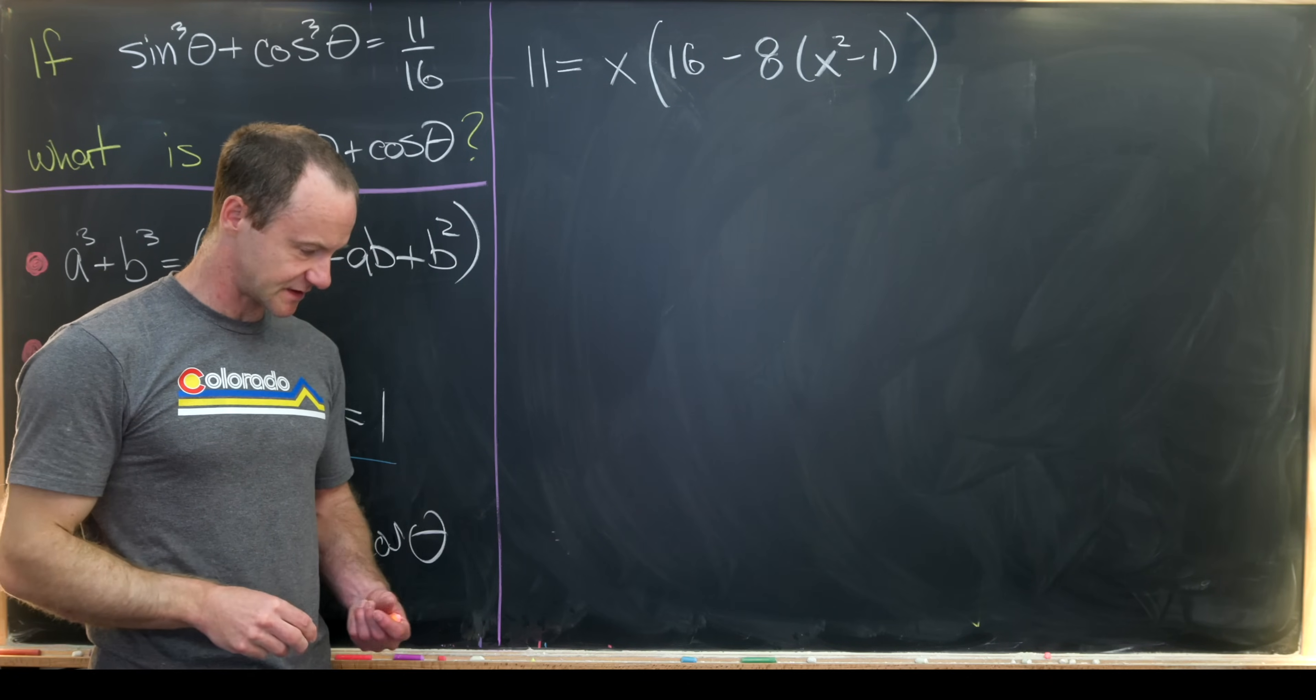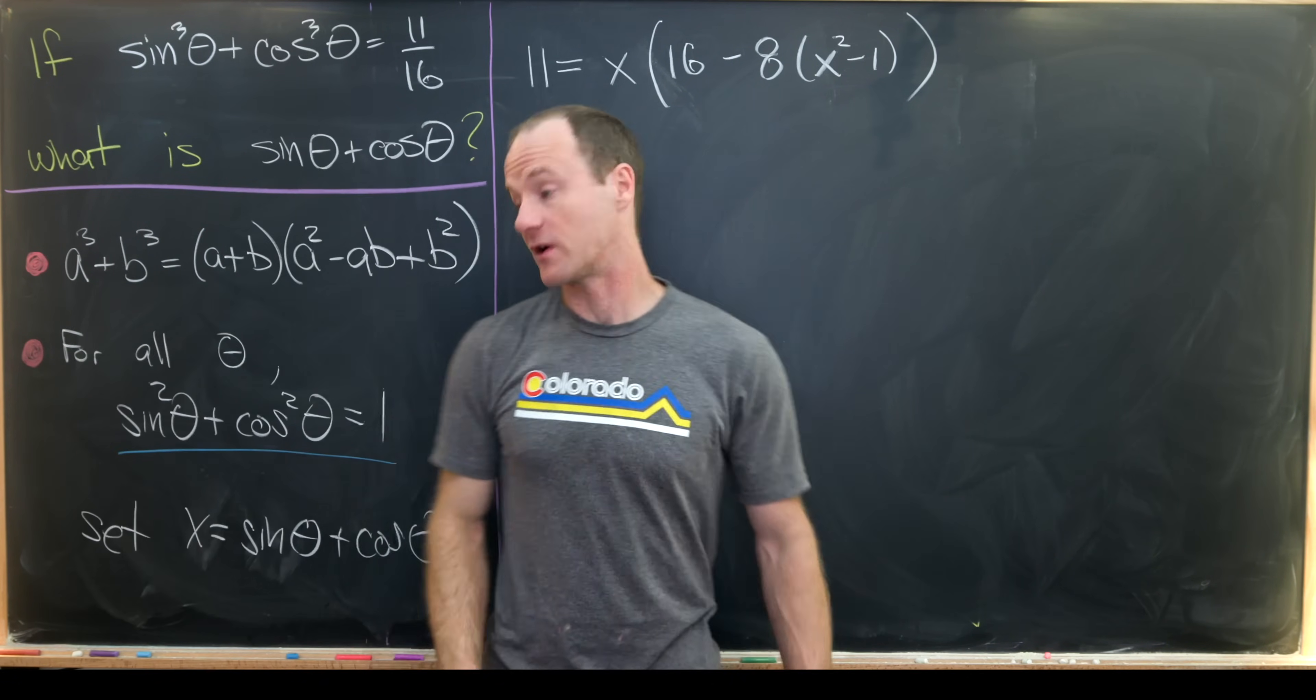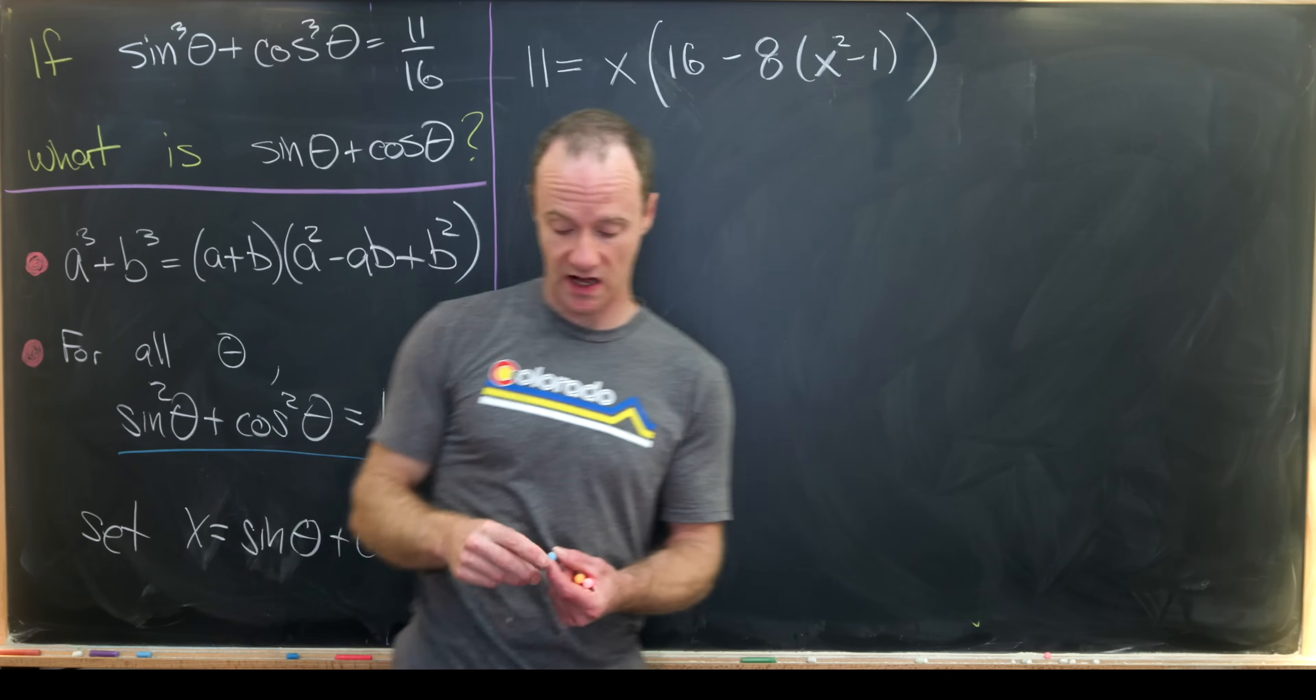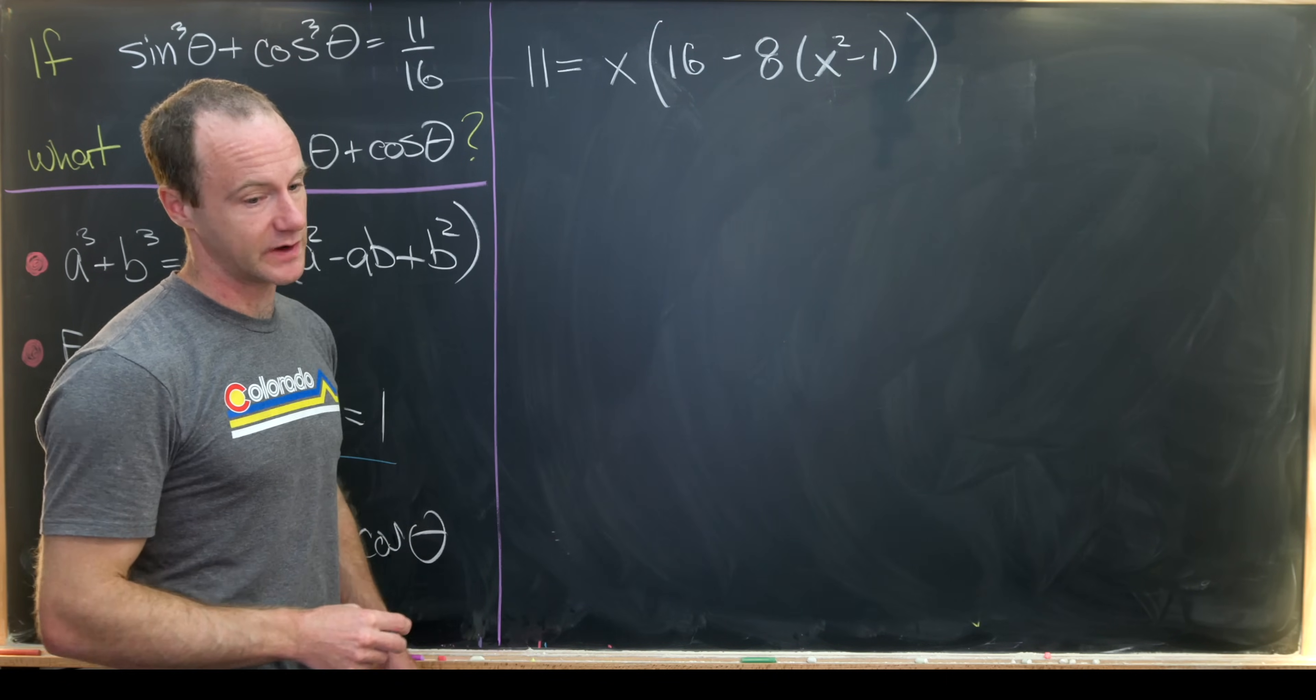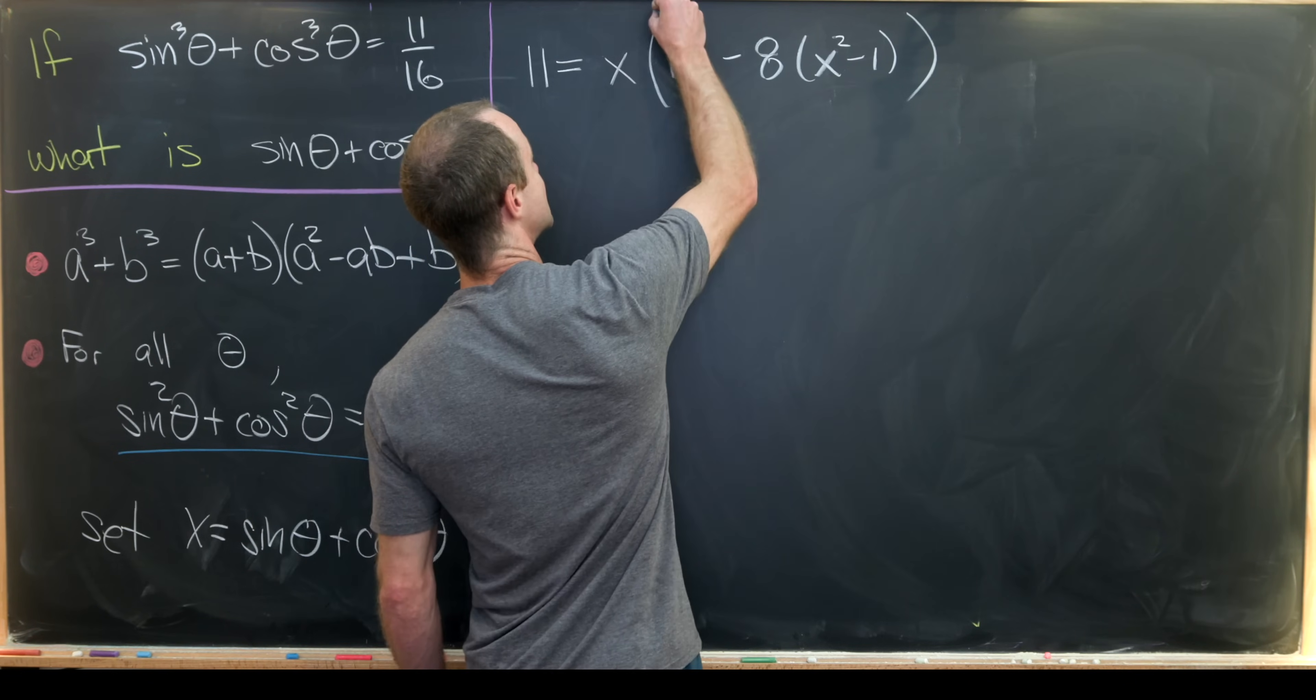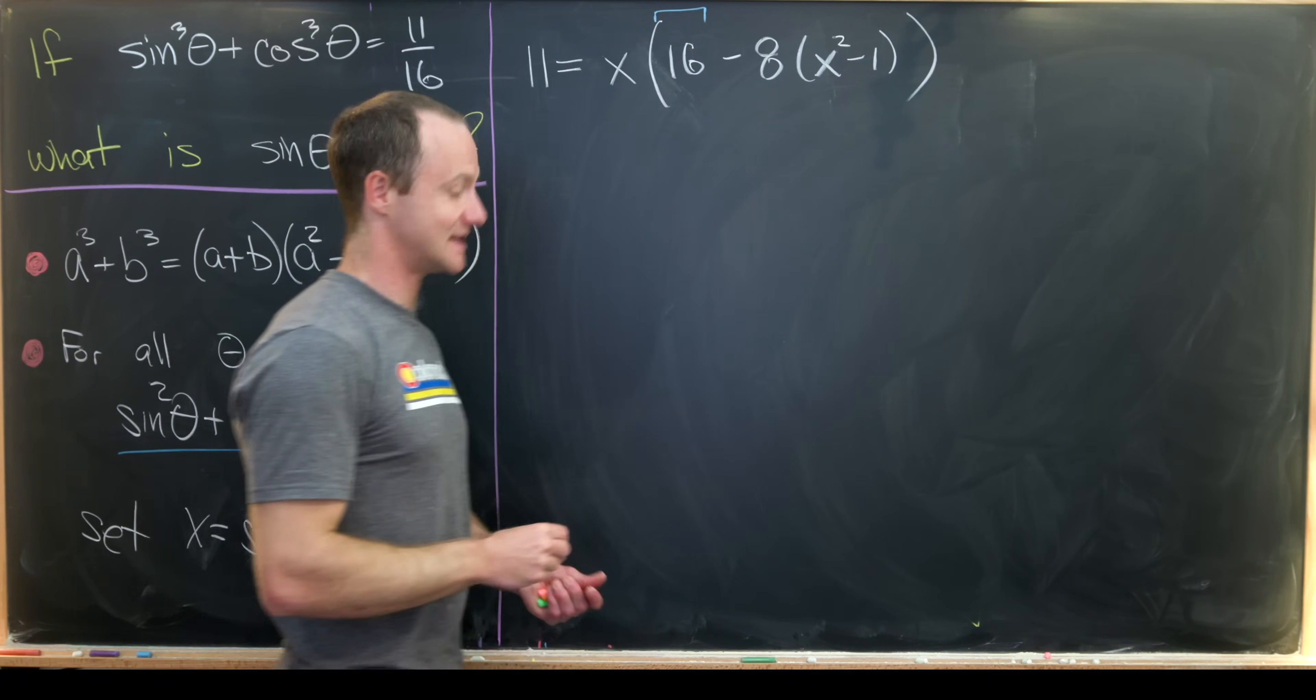So this is where we left ourselves on the last board. Our variable x, which was sine theta plus cosine theta, in other words our goal object, satisfied the following cubic polynomial. There was a bit of a typo on the last board, but I fixed that here. Here we have a 16 instead of a one.